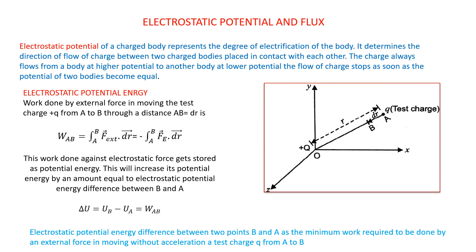It determines the direction of flow of charge between two charged bodies placed in contact with each other. Charge always flows from a body at higher potential to a body at lower potential, and the flow of charge stops as soon as the potential on the two bodies becomes equal.